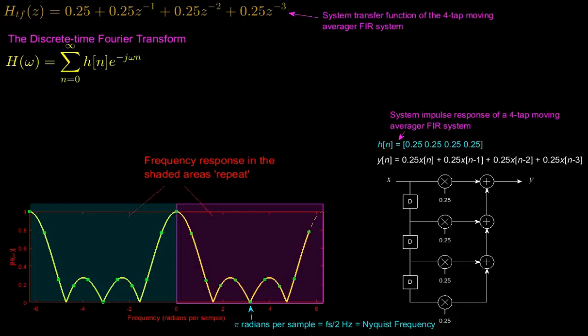Also notice that the frequency response repeats every 2π radians per sample, since e^(jωx) is equal to e^(jωx + k·2π), where k is an integer. And I'll get back to this repeating feature later on.